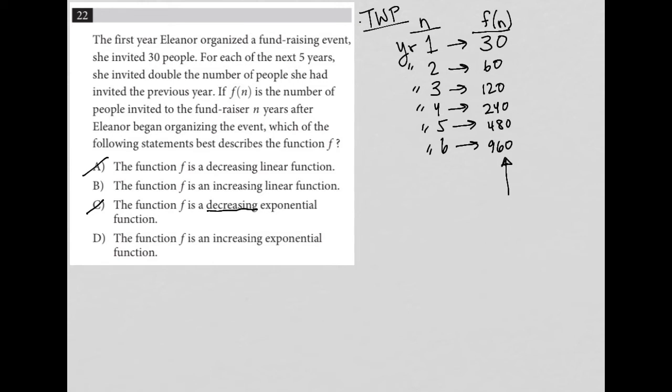So we know for sure that we should be increasing. So we're left with either B or D. Okay, so what's the difference between these two answers? Well, choice B says the function F is an increasing linear function.